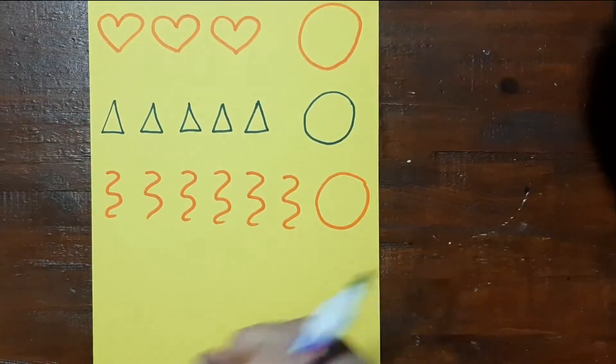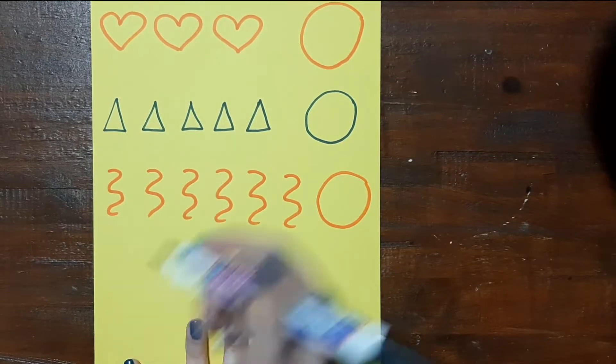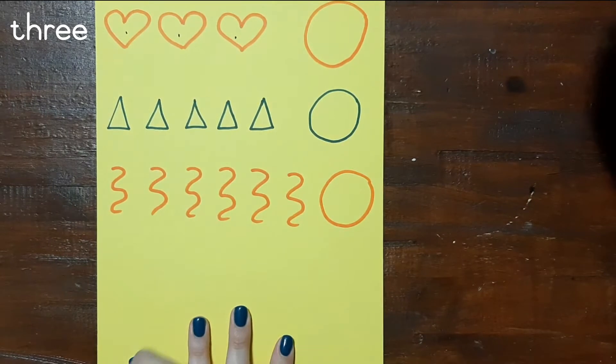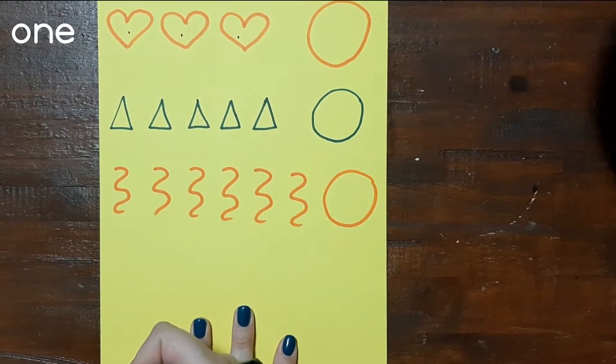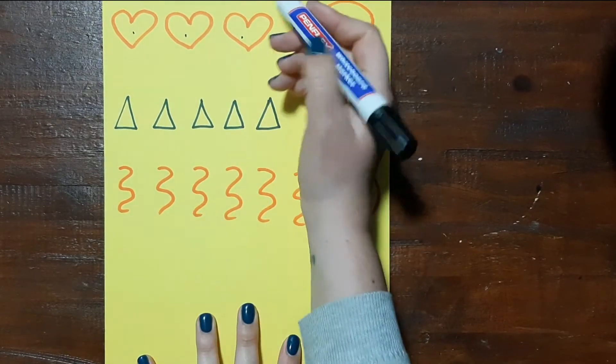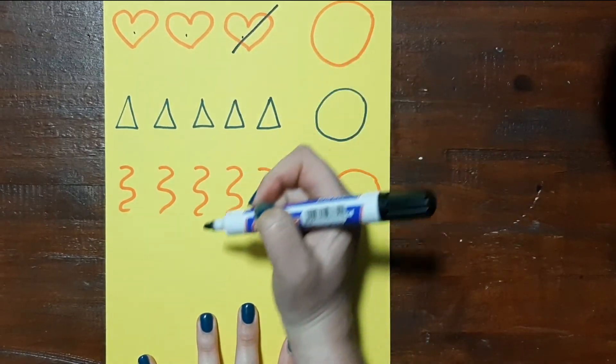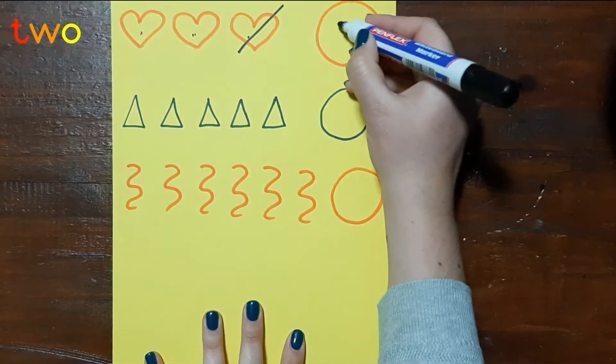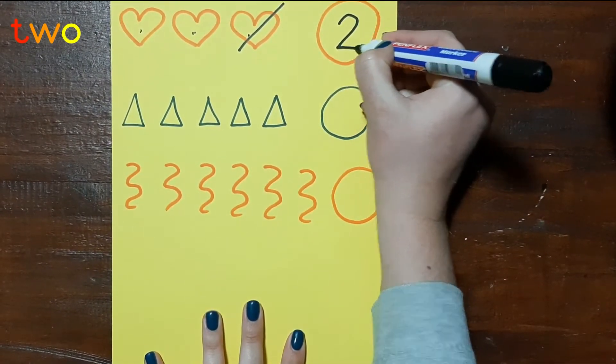Now let's do subtraction on this paper. So I've got 3 hearts: 1, 2, 3. And my teacher says take 1 heart away and write down how many are left. So we're going to take 1 heart away and we're going to count how many are left: 1, 2. And I'm going to write my answer in the block.